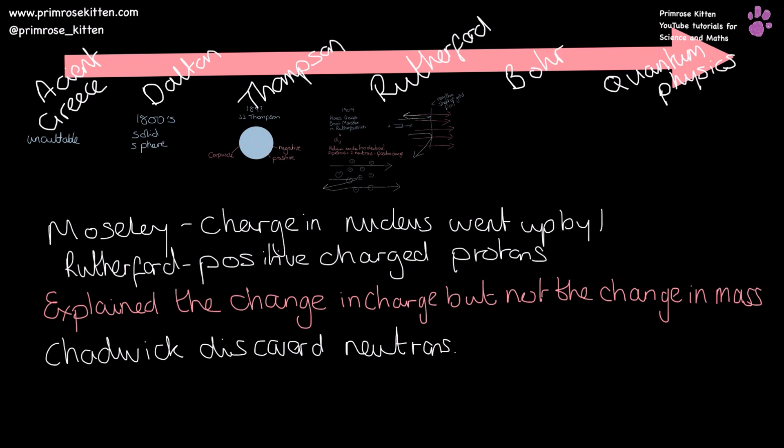A few things to add to our timeline: Moseley discovered that the charge in the nucleus increased by one each time going through the periodic table, and Rutherford identified the positively charged part as protons. These two things explained the change in charge across the periodic table, but not the change in mass. The change in mass wasn't explained until Chadwick discovered the neutron.